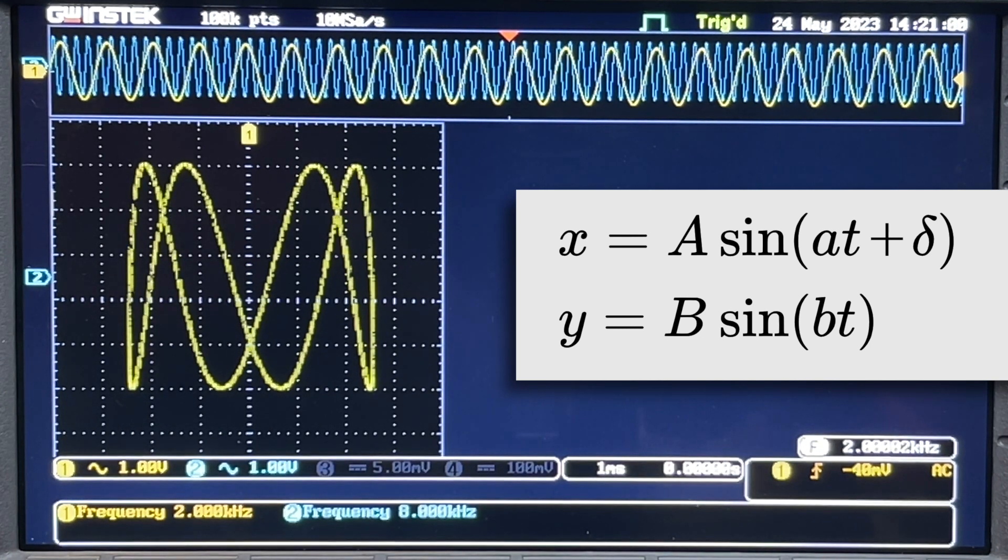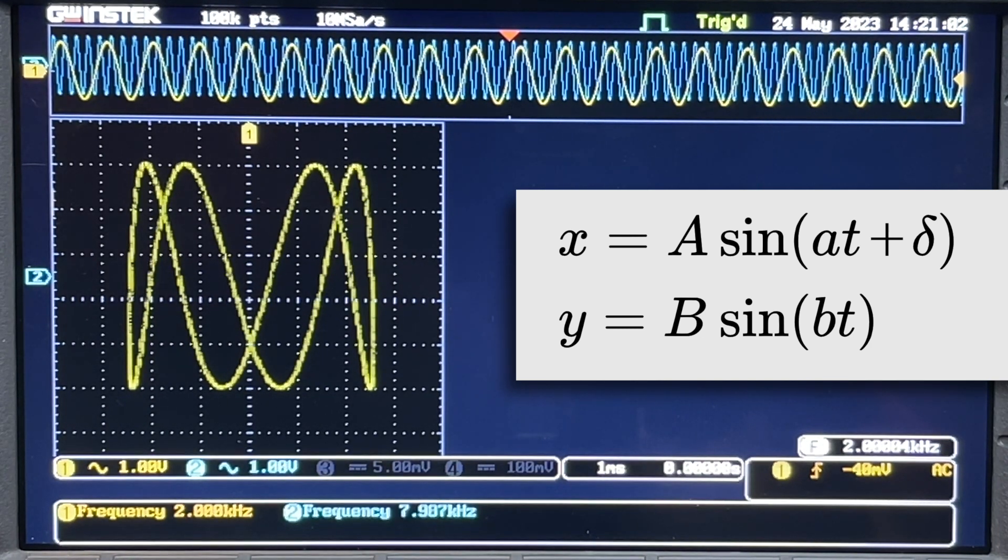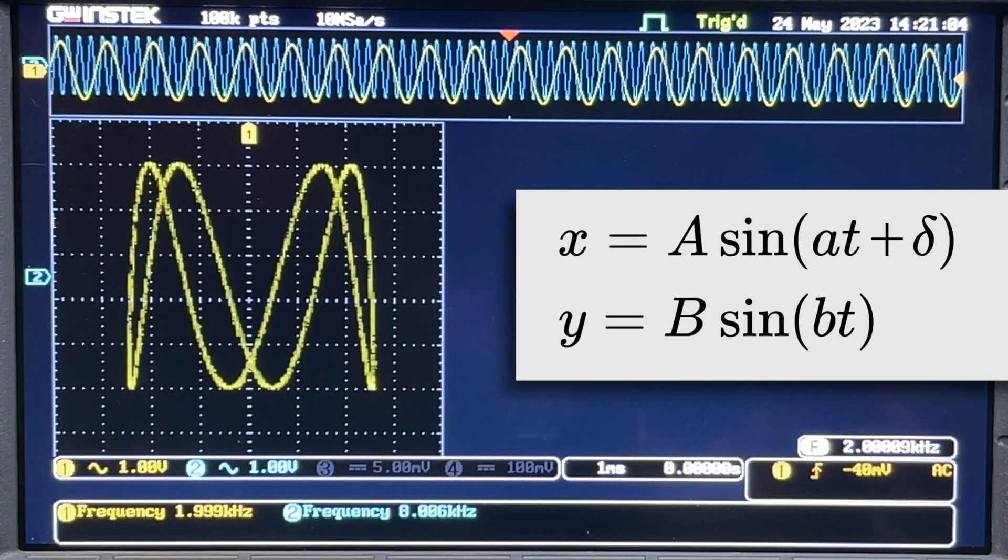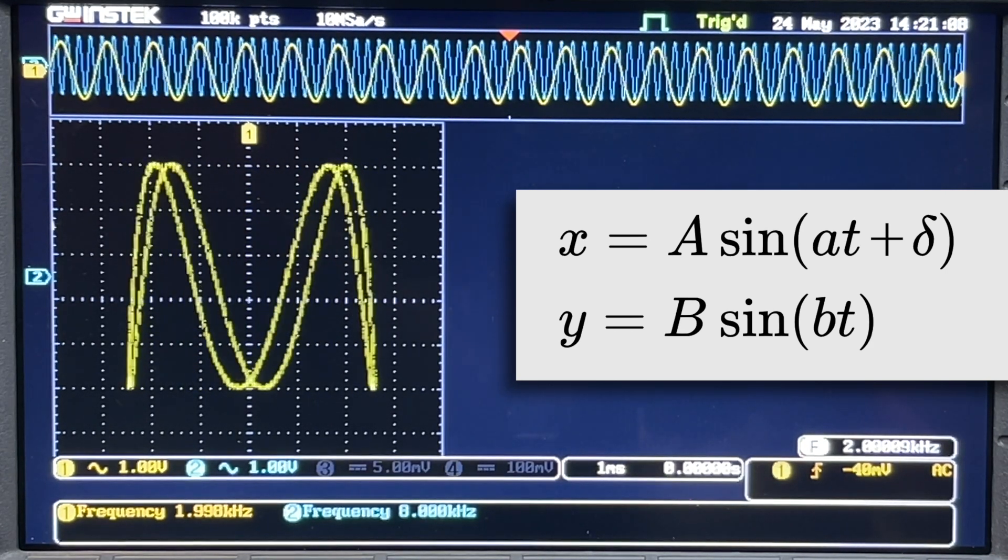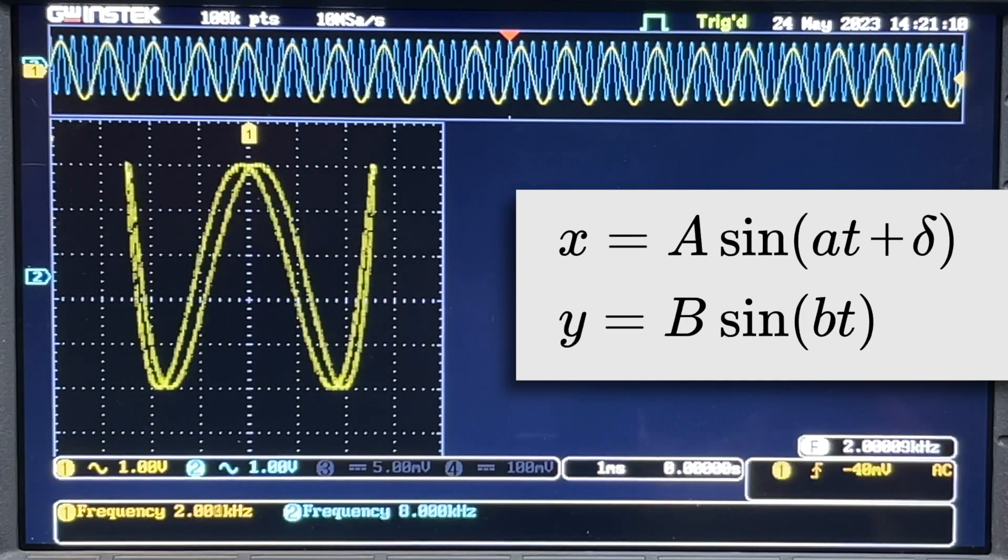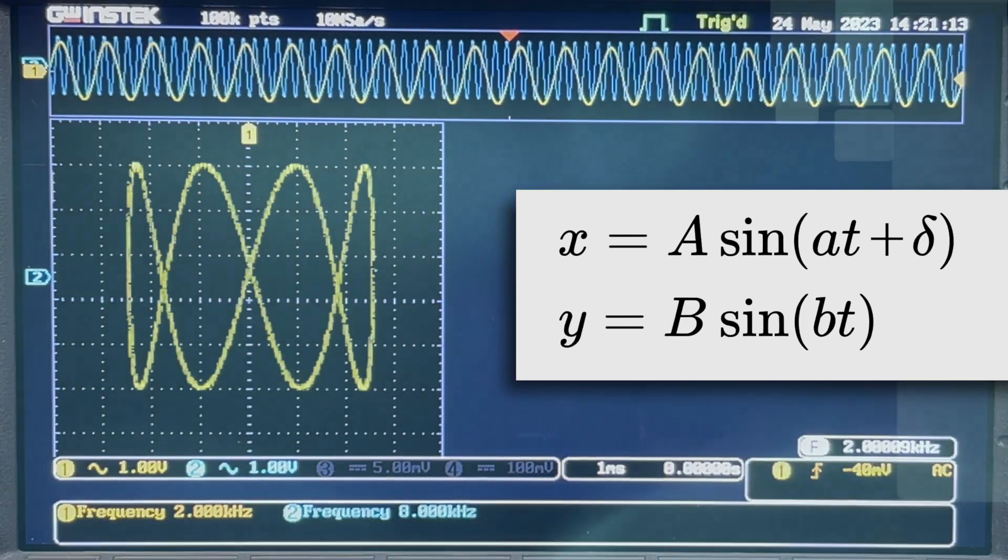But it even gets better. Because by slightly varying one of the frequencies, the ratio is no longer precise. And the figure will start to move. Interactive television! Who needs Netflix when you can view this?